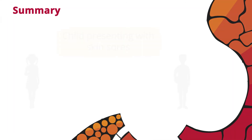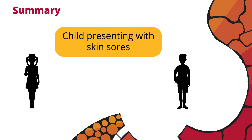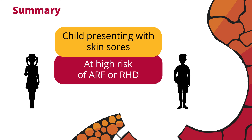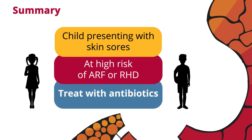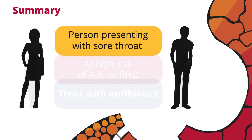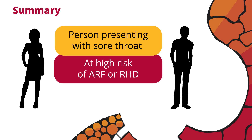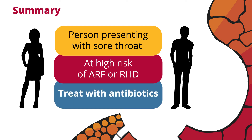In summary, children presenting with one or more purulent or crusted skin sores who are identified as being at high risk of ARF, including people who have a history of confirmed ARF or RHD, should be treated with antibiotics irrespective of other clinical features. People presenting with a sore throat who are identified as being at high risk of ARF, including those with a history of confirmed ARF or established RHD, should also be treated with antibiotics irrespective of other clinical features.